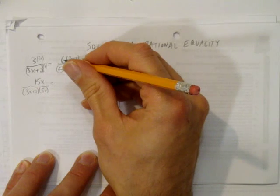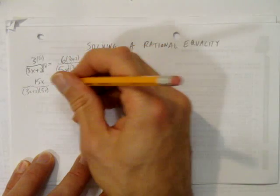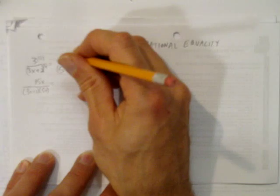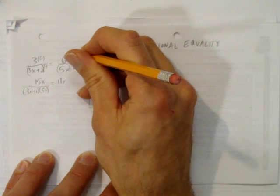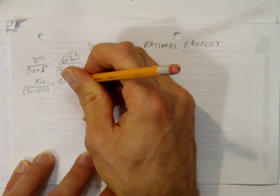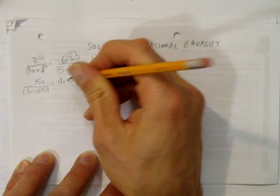On the right-hand side, we have 6 times 3x plus 2. We'll expand those brackets by rainbowing the 6 in. 6 times 3x is 18x. And 6 times 2 is 12.